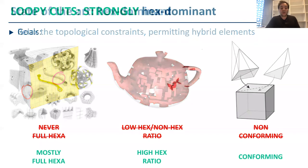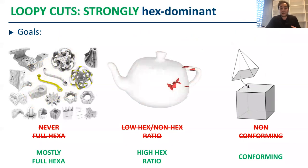So, we actually instead propose LoopyCuts that produces strongly hex-dominant meshes. What does it mean? That for most cases, we obtain full hex meshes and we introduce a minimal amount of hybrid elements keeping the final mesh conforming.